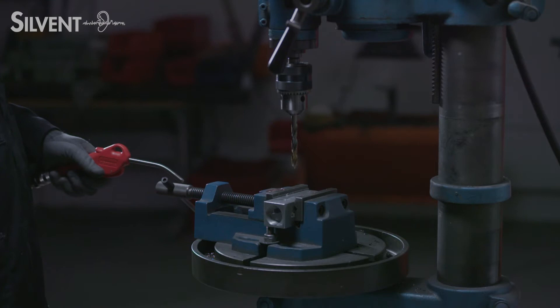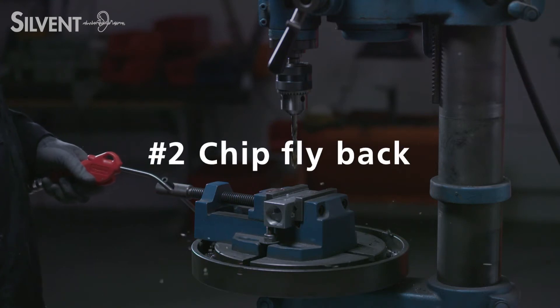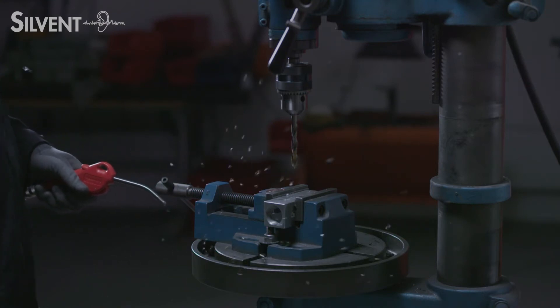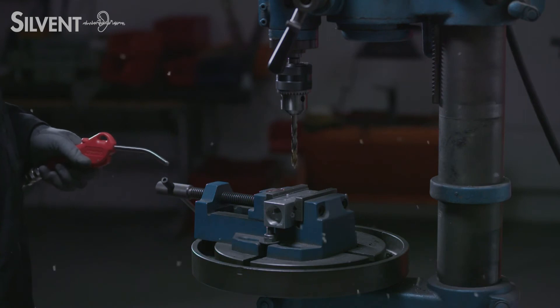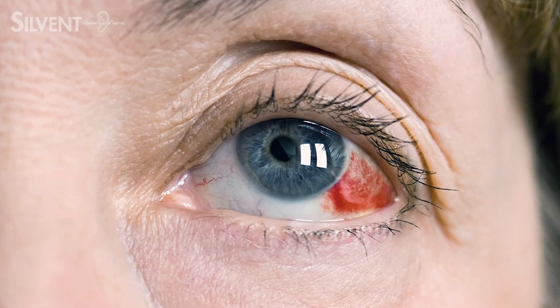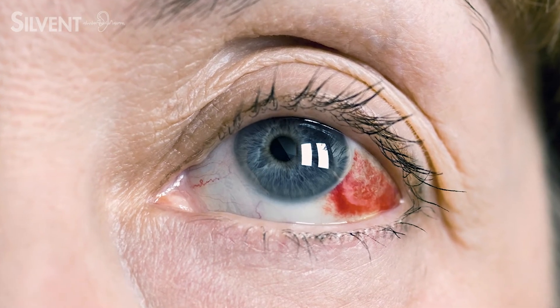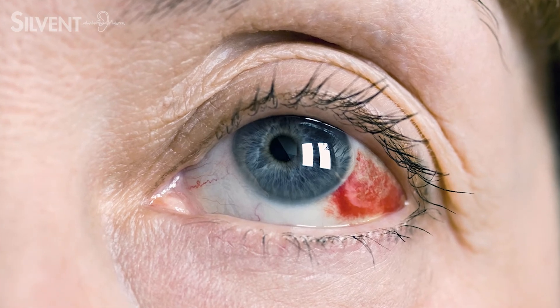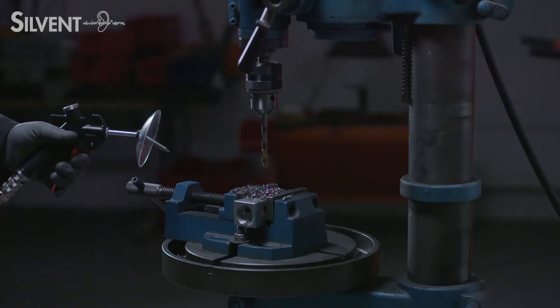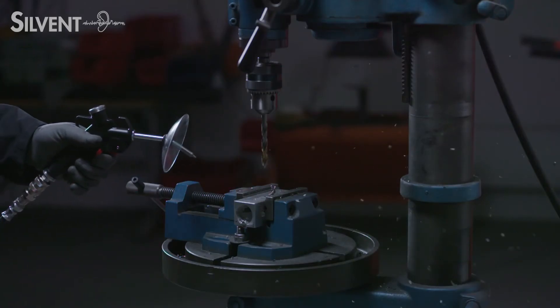When cleaning with compressed air, it is common that smaller particles or debris bounce back towards the operator. Even tiny particles can cause serious injury if it hits the operator's eyes. Therefore, in addition to wearing safety glasses, effective chip guarding must be used when blowing with compressed air.